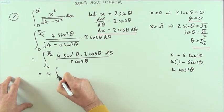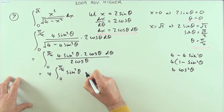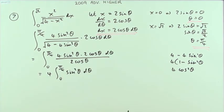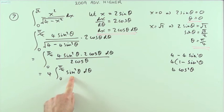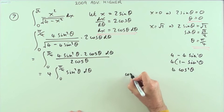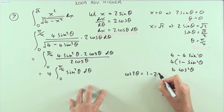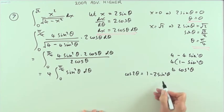So I'm left with four times the integral from zero to π/4 of sin squared θ dθ. On the surface that looks easy enough, except it's not one of the standard integrals. The only simple trigonometric integrals are those with a trig function of a linear expression, not the square of a trig function.